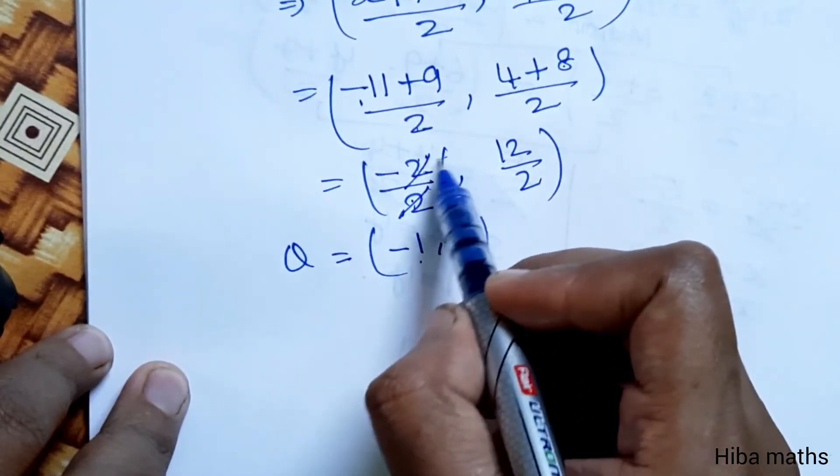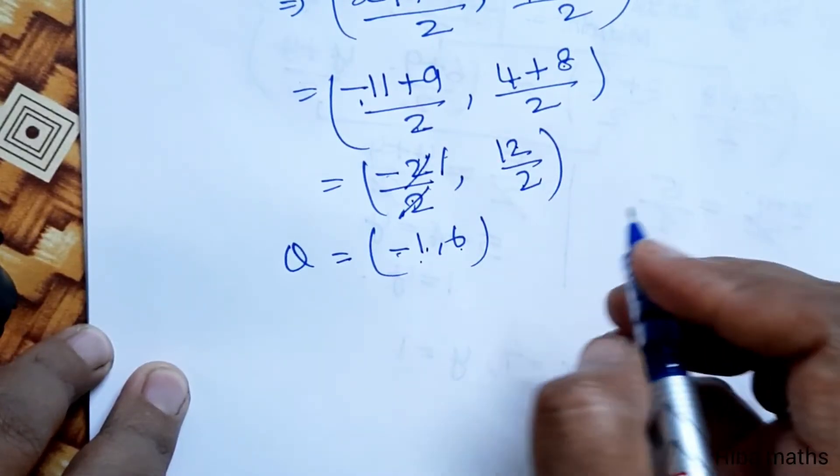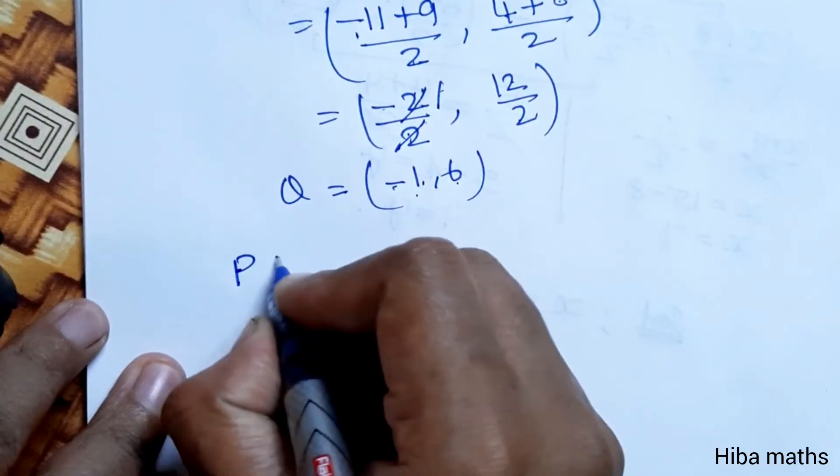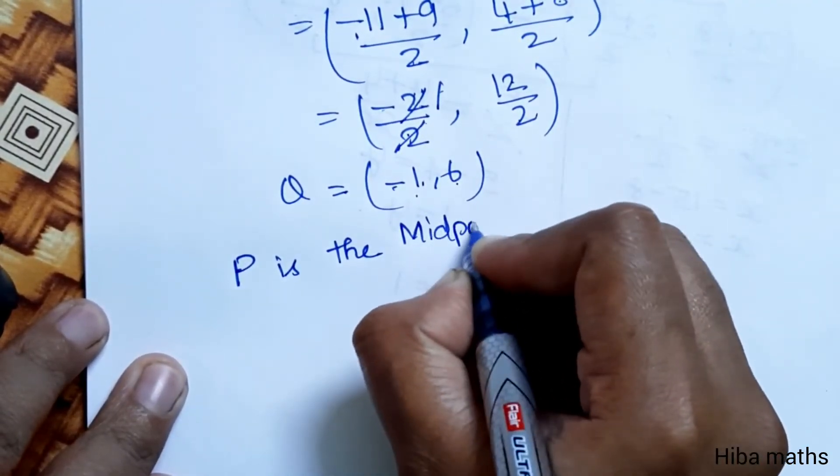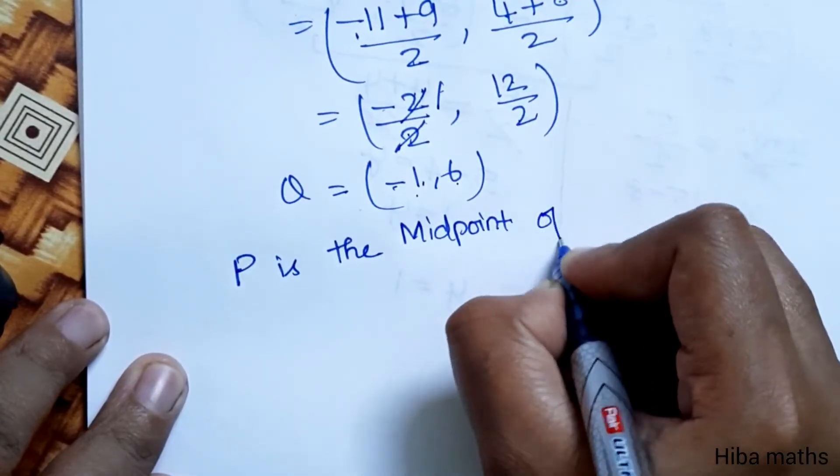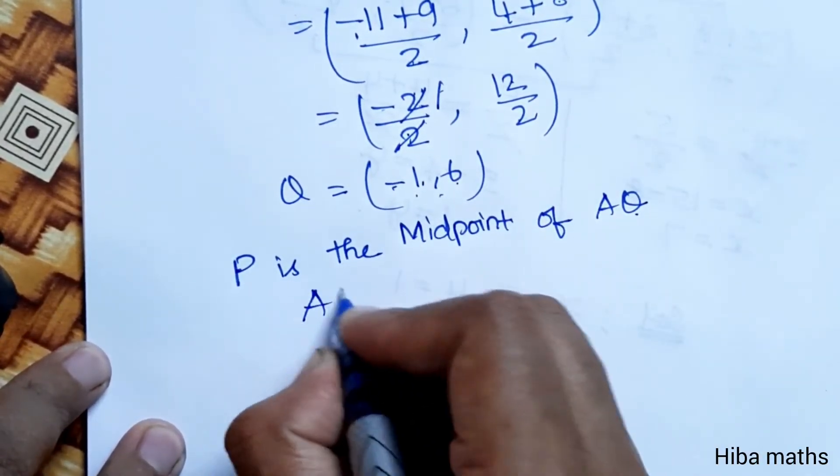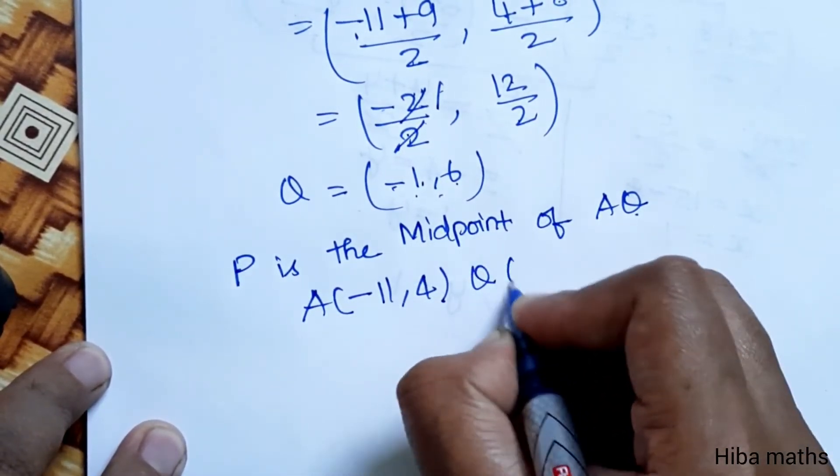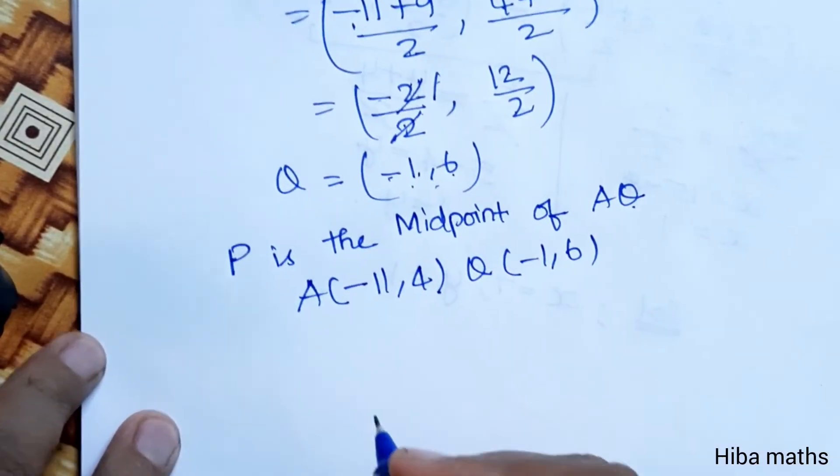This cancels to -1, 6. So Q point can be put. P is the midpoint of AQ. A point is (-11, 4) and Q is (-1, 6). Q is the midpoint.